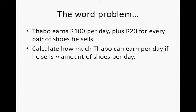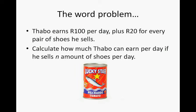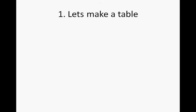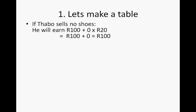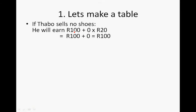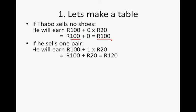We're going to take away the shock from the word problem and turn it into a can of bullets. Let's start by making a table. If Tabu sells no shoes, he will still get 100 rand, but he will earn no extra commission — so zero times 20 rand, which is zero. He will only get the 100 rand. If Tabu sells one pair of shoes, he will earn 100 rand plus one times 20, which is 120 rand.